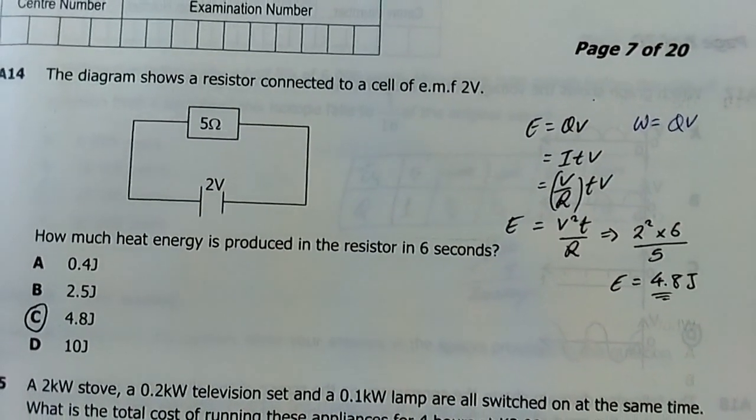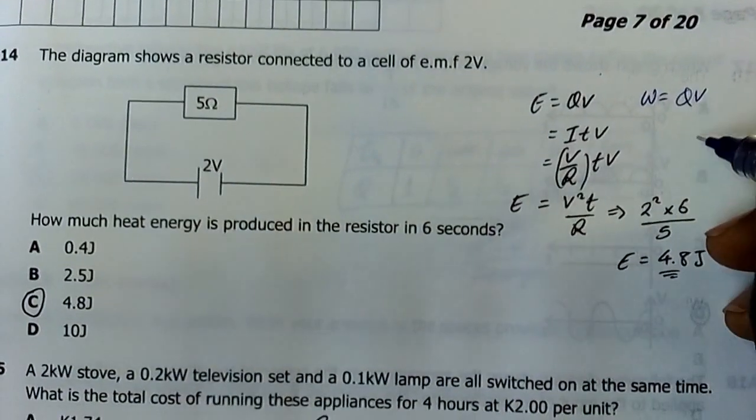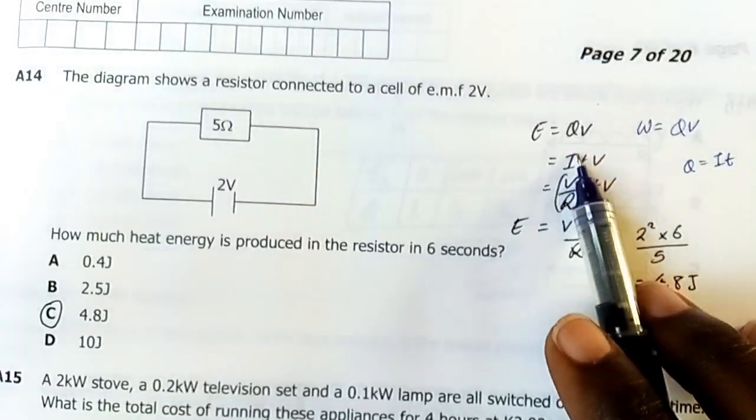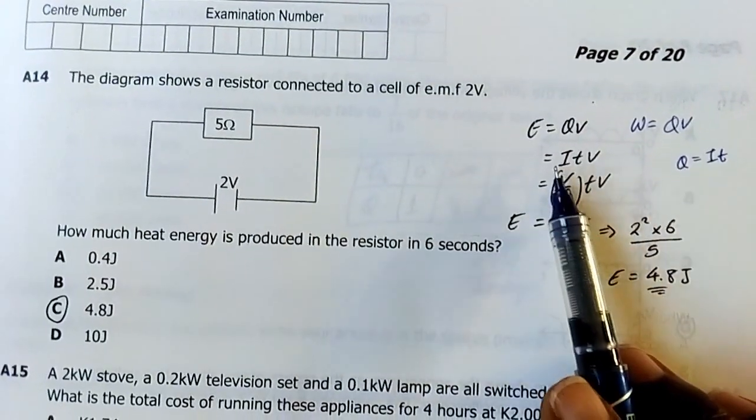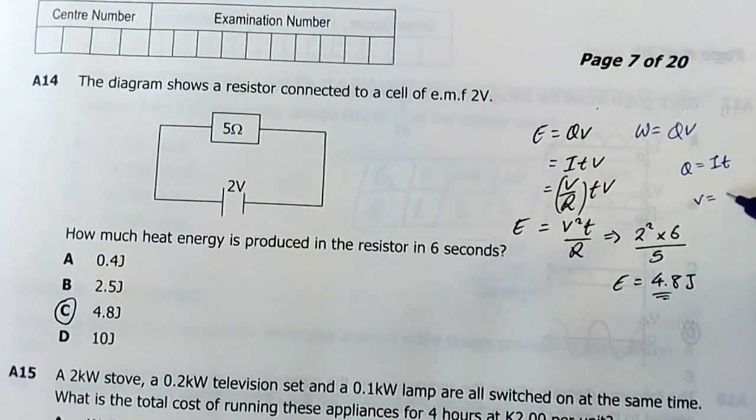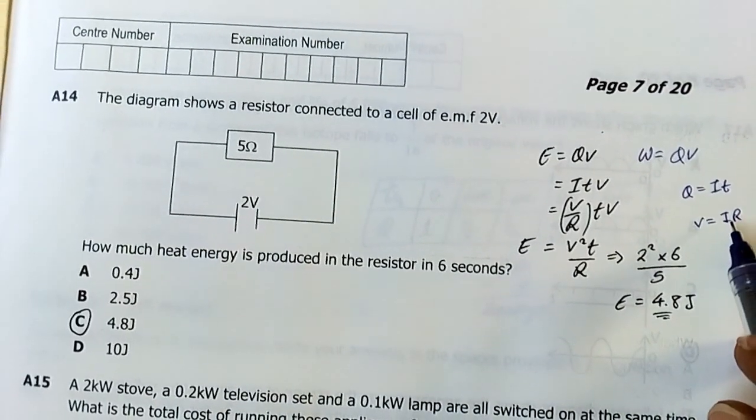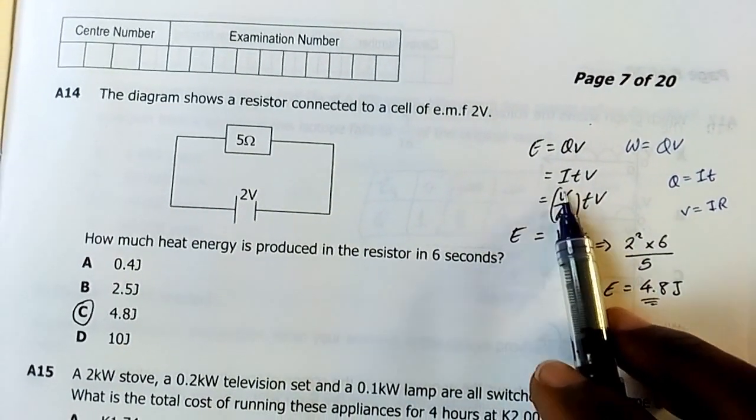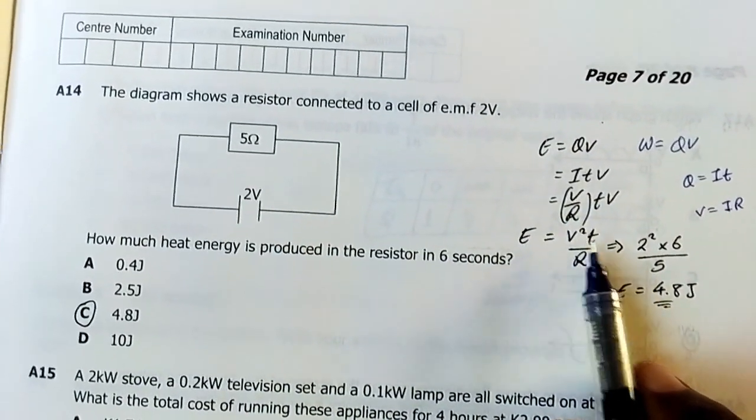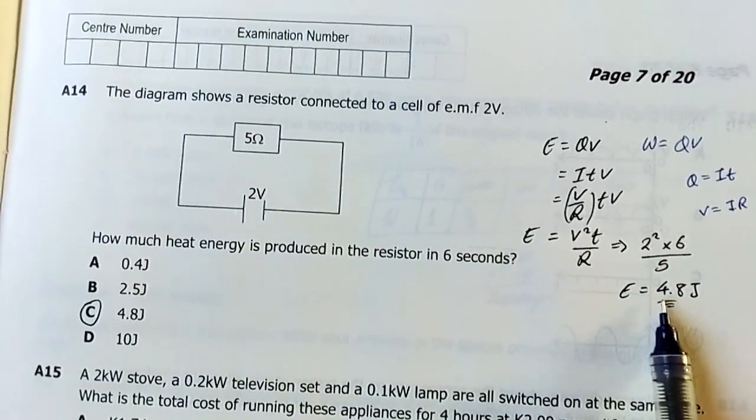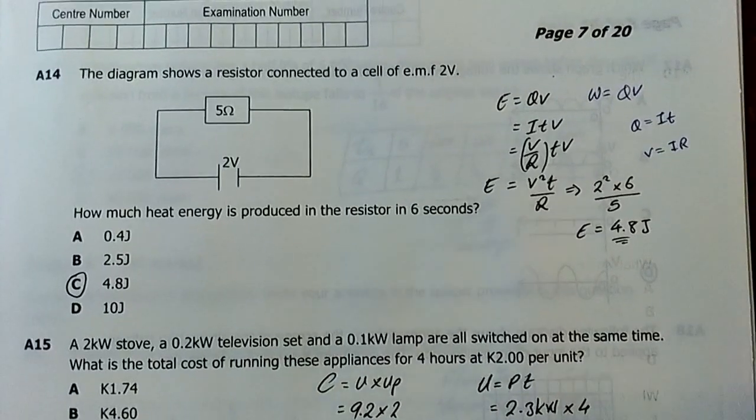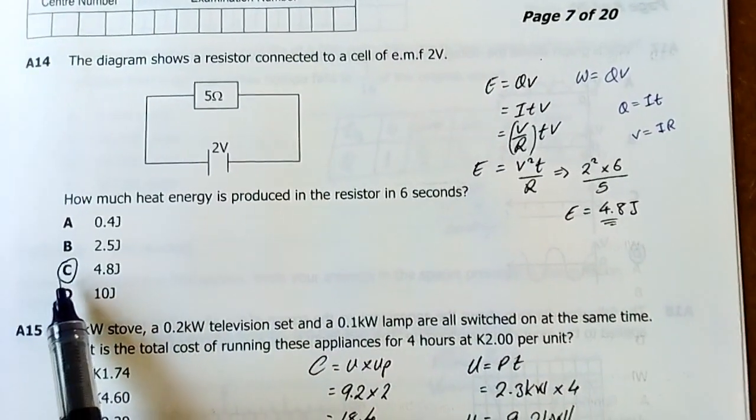Charge equals it, so I replace the q with it here. And then finally i equals v over r from the formula v equals ir where I make i the subject. So this one becomes like this: I'm going to have v times t times v over r. V times v is going to be v squared times t over r. My answer comes as 4.8 joules, C.